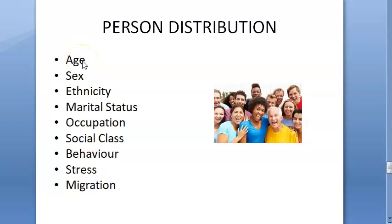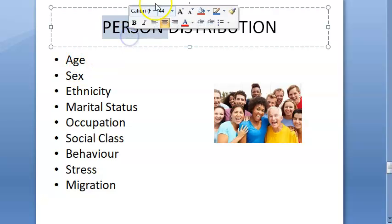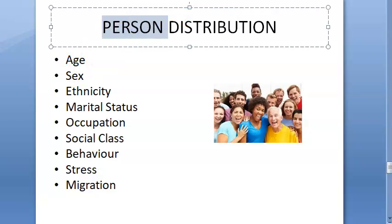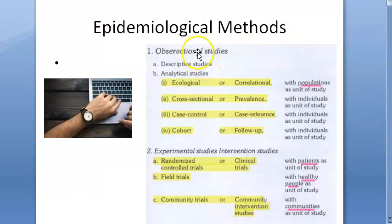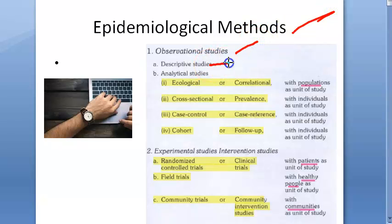Hello people, in this video let us look at person distribution — how diseases are distributed amongst people. Currently, in epidemiological methods, that is epidemiological studies, we are looking at observational studies and descriptive studies.